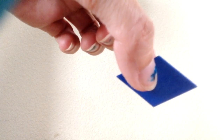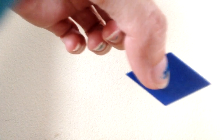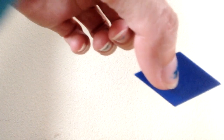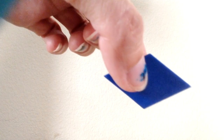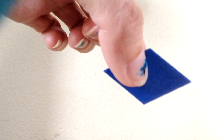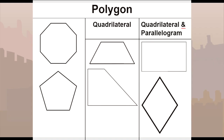A rhombus is a polygon because it has straight sides. It's a quadrilateral because it has four sides, and it's a parallelogram because its opposite sides run parallel to each other. So hopefully this all makes sense. A polygon is just a shape with straight lines. A quadrilateral is a polygon that has four sides. A parallelogram is a quadrilateral that has opposite sides that are parallel.